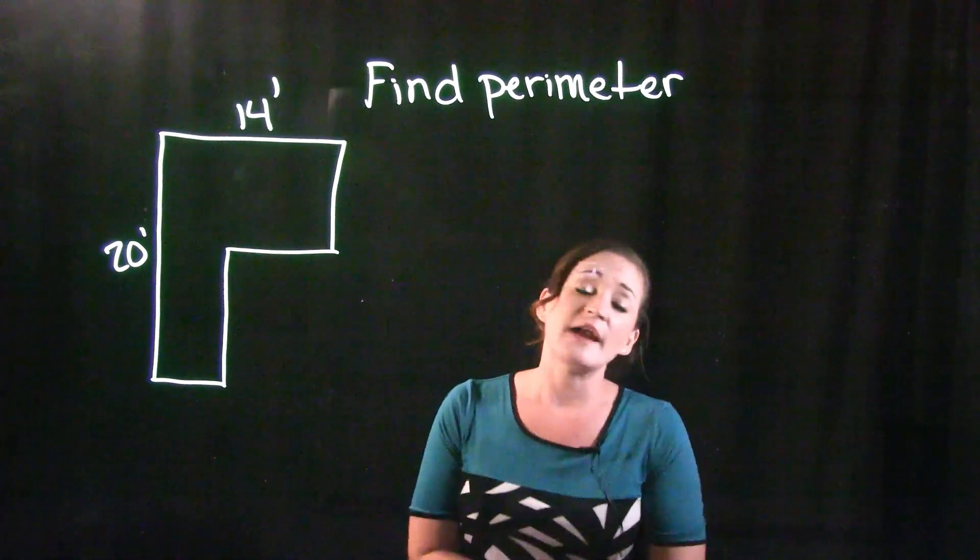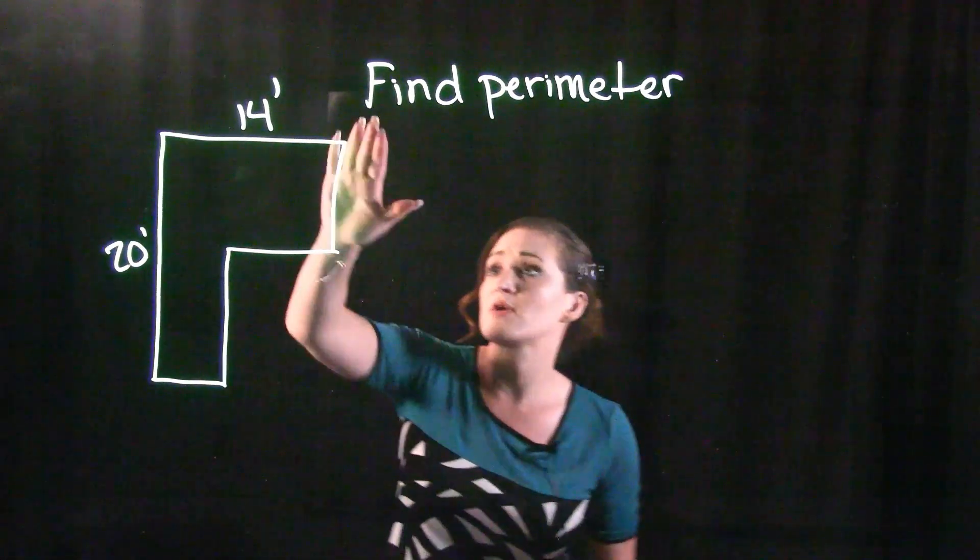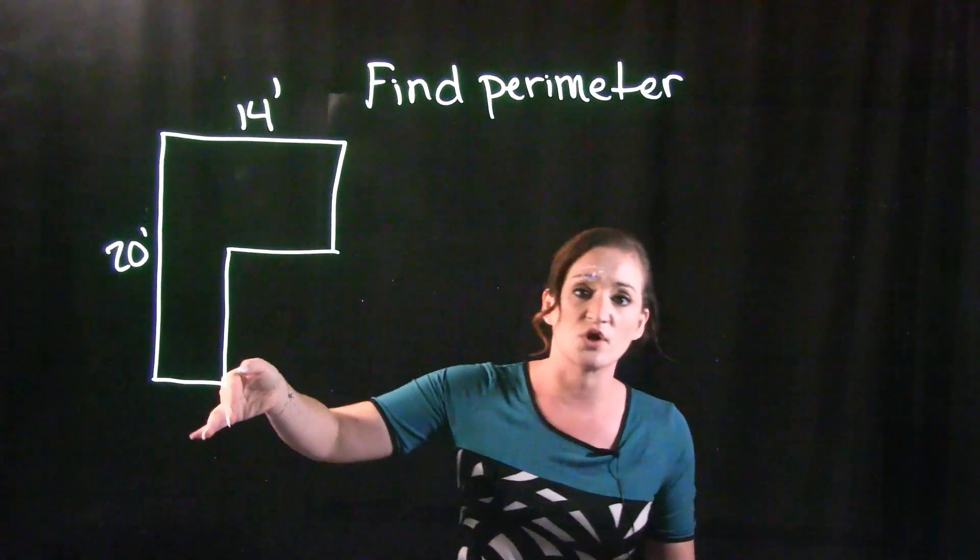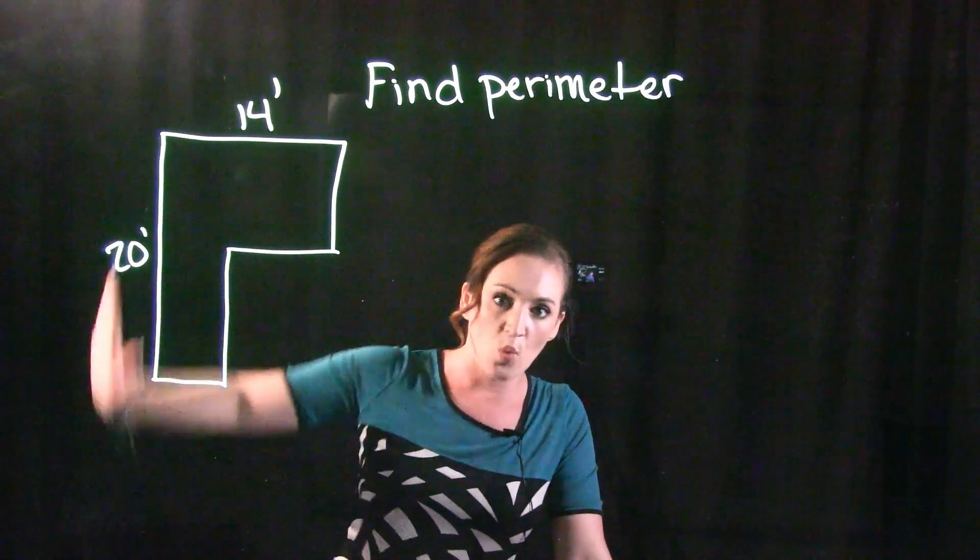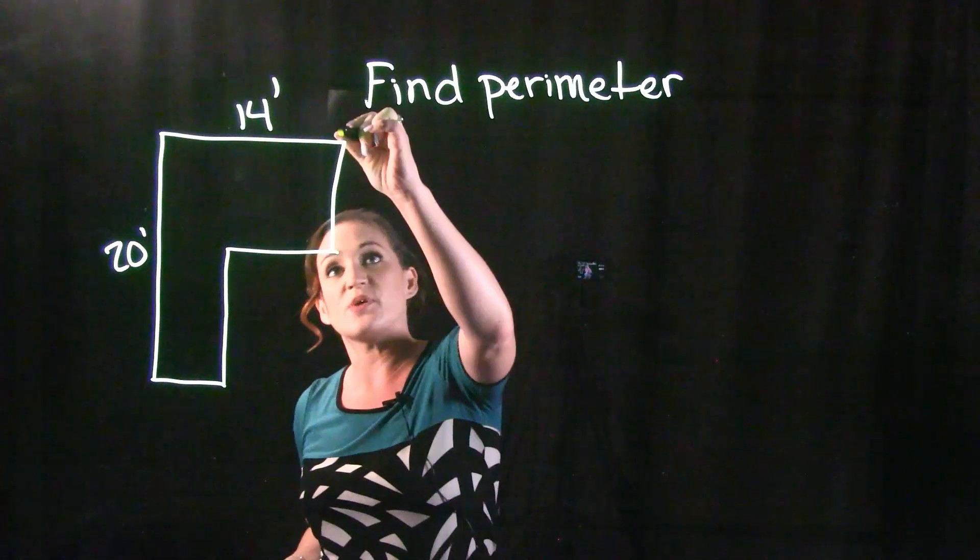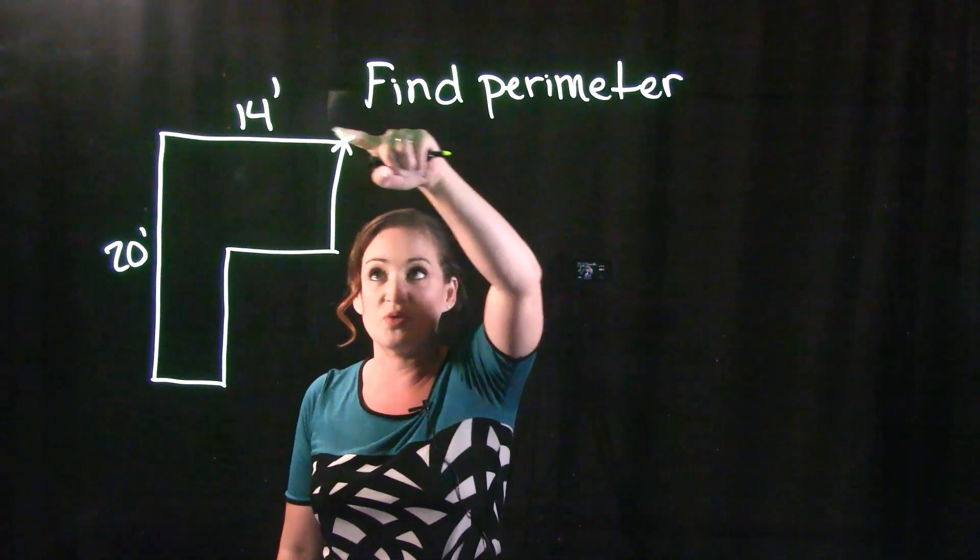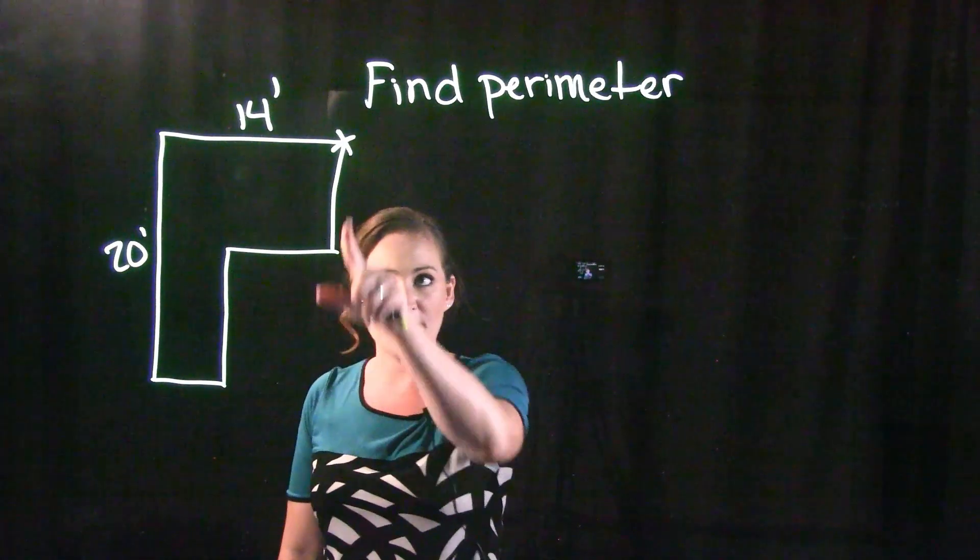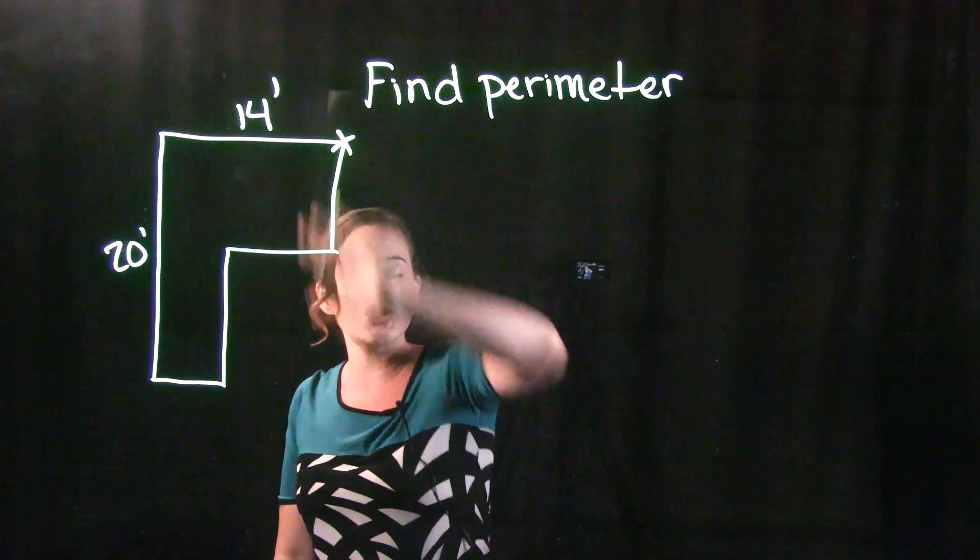When it comes to finding the perimeter of a shape, hopefully we do know that perimeter is the distance around. I always like to think about a security officer. If you're a security officer, you always hear them talk about walking the perimeter, walking the outside of the building. So if I was a security officer standing here and walking the perimeter, how far would I have to walk? Where am I walking? I would have to make my way completely around this shape here.